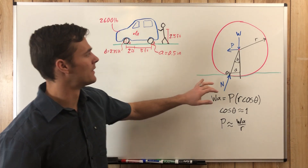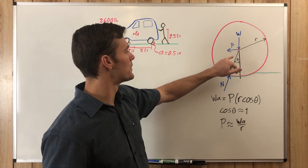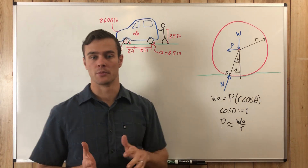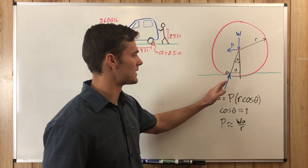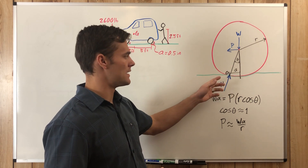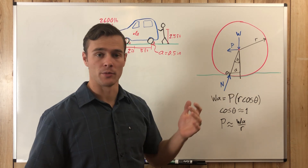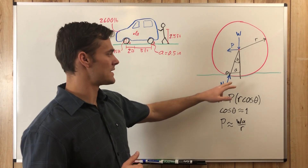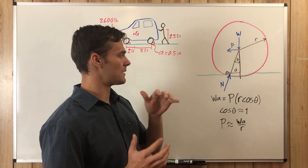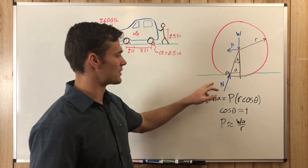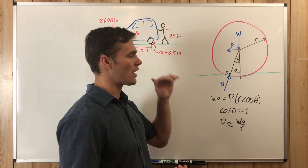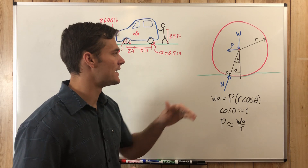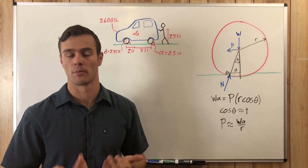Say we have this disc here with weight W being pushed with a force P. Because these two objects aren't perfectly rigid, the normal force is going to be offset at a certain angle theta from the line of action of W. If they were perfectly rigid, the normal force and the weight would line up and there would be no rolling resistance. But because some deforming happens, this normal force is offset and has a component in the opposite direction of P. So this force P is going to be the minimum force needed to start rolling this disc.